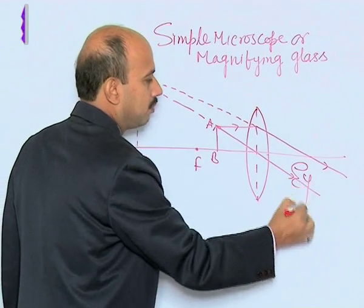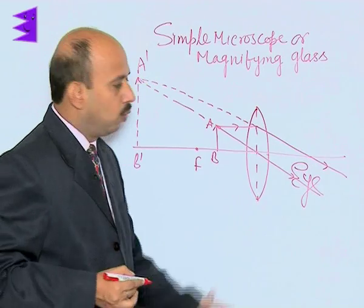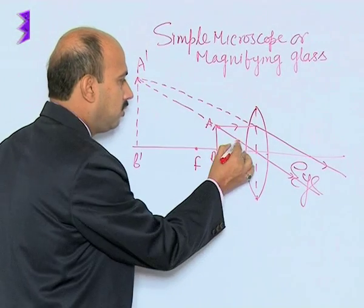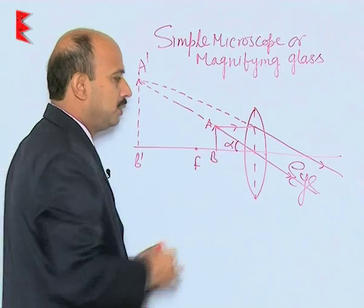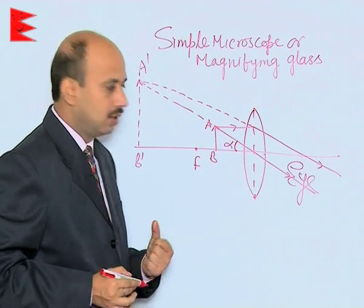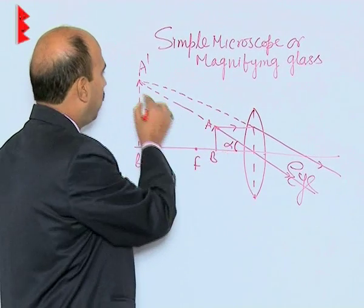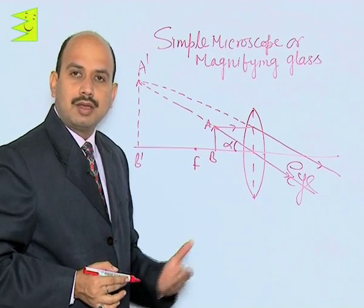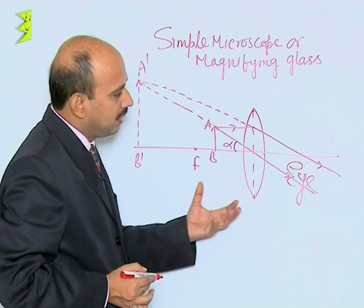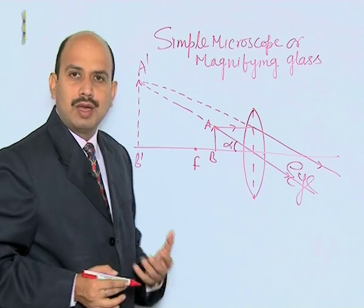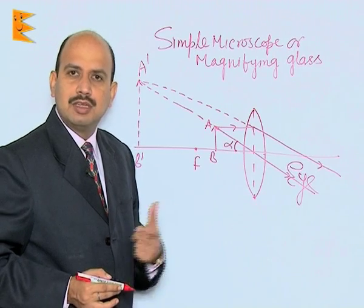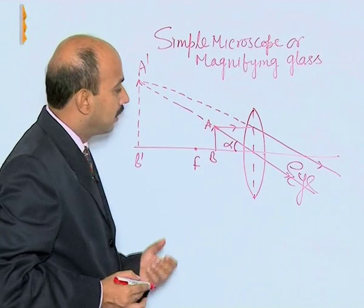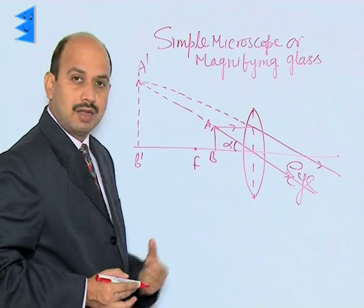When you are looking at the object from this side, this is the angle subtended by the object at the eye. This is also equal to the angle subtended by the image. This image is virtual, erect, and highly magnified - by this way you can easily read very small letters written in newspapers and on other things. Here, this angle is alpha.